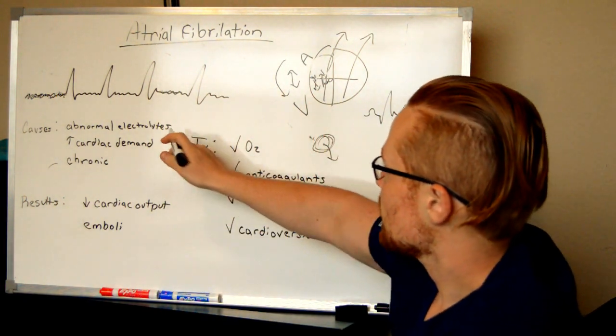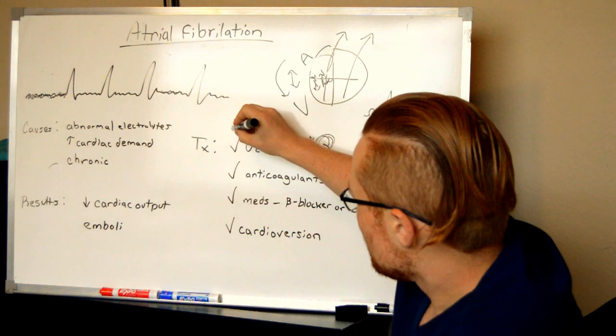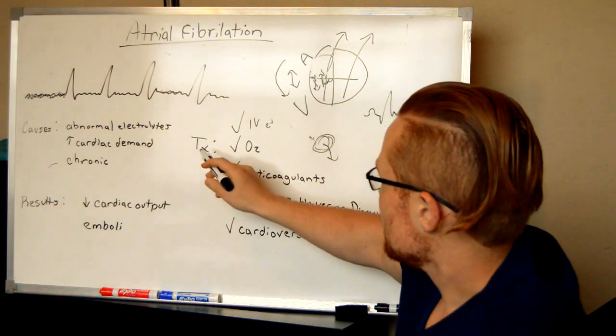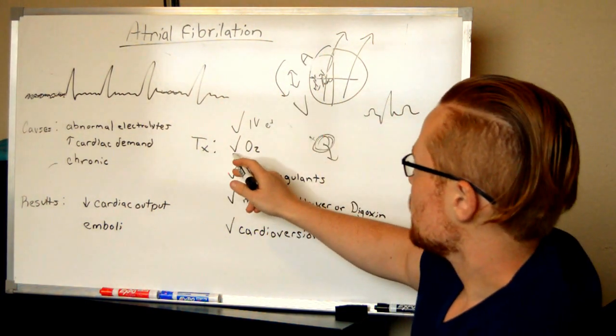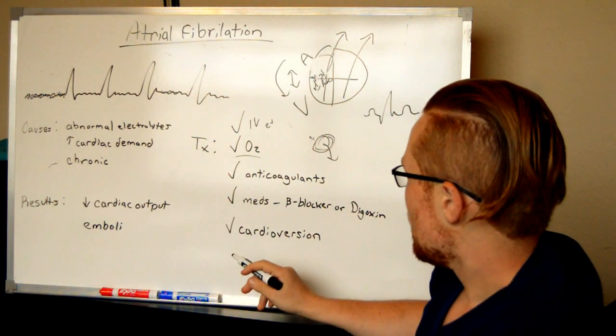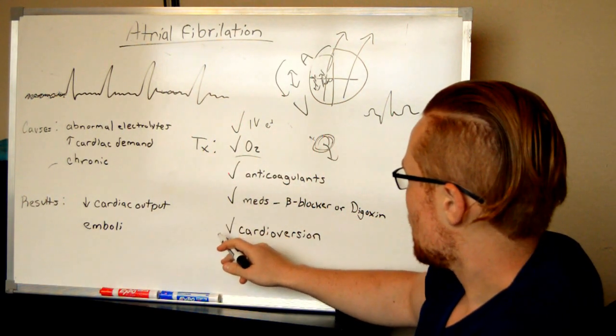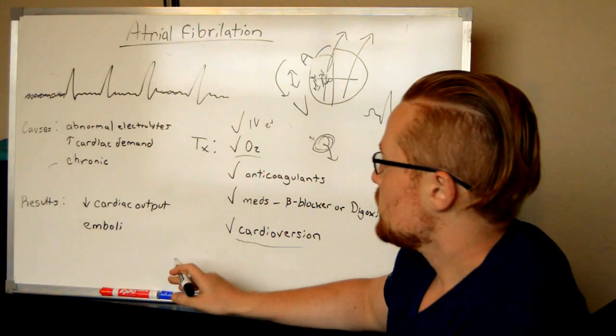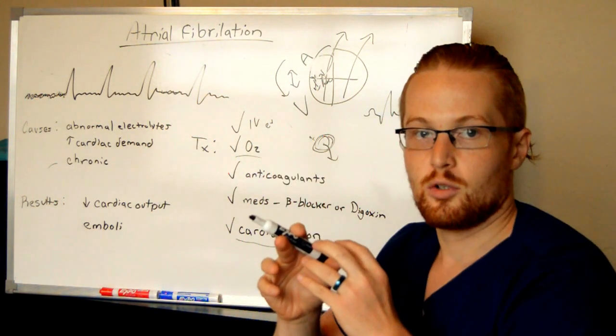So if it's due to electrolytes, you want to give them the electrolytes they need. If it's cardiac demand, you might want to give them oxygen. In some cases, they'll need cardioversion to shock the heart into a normal rhythm.